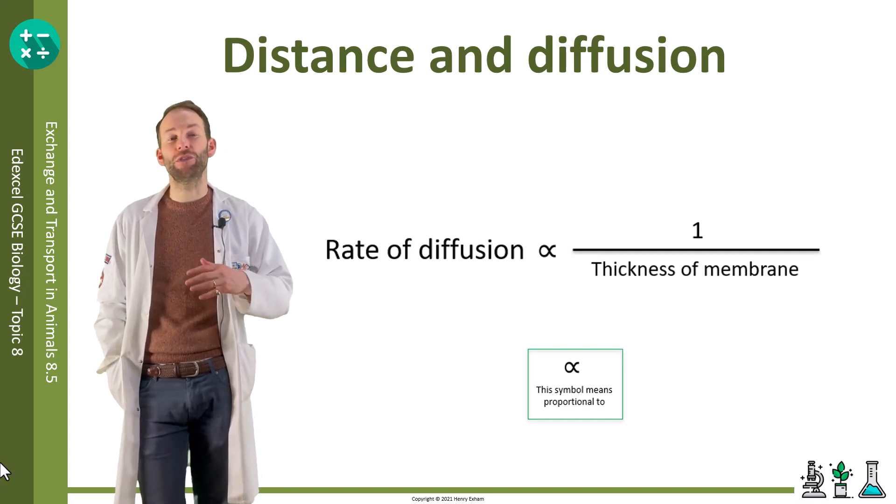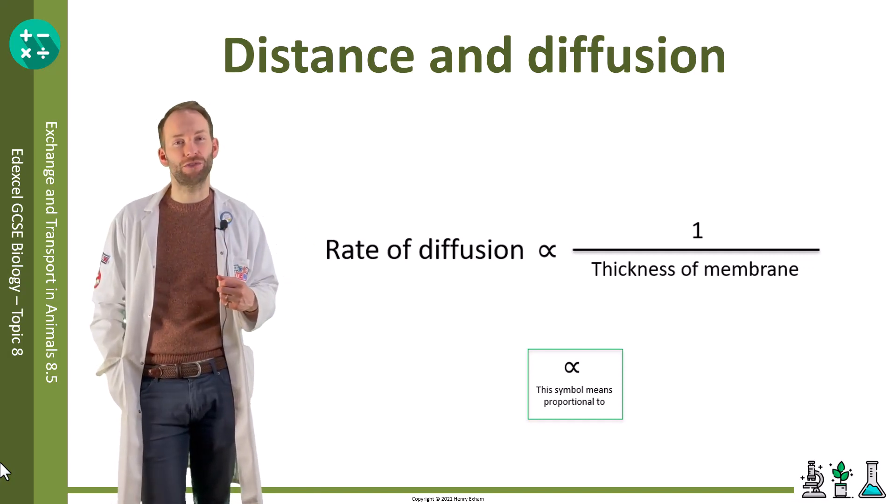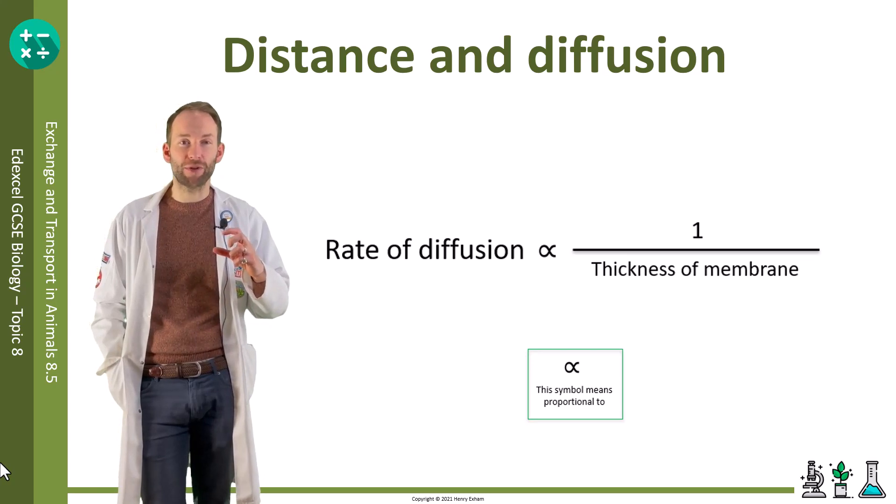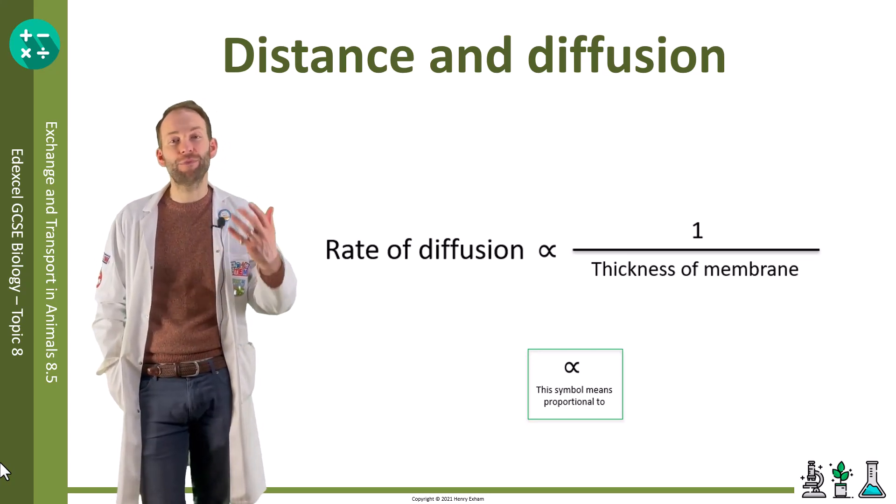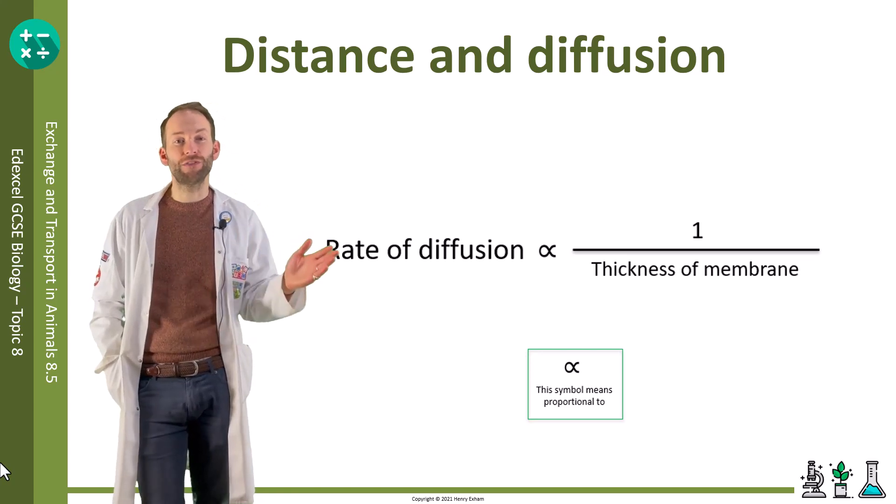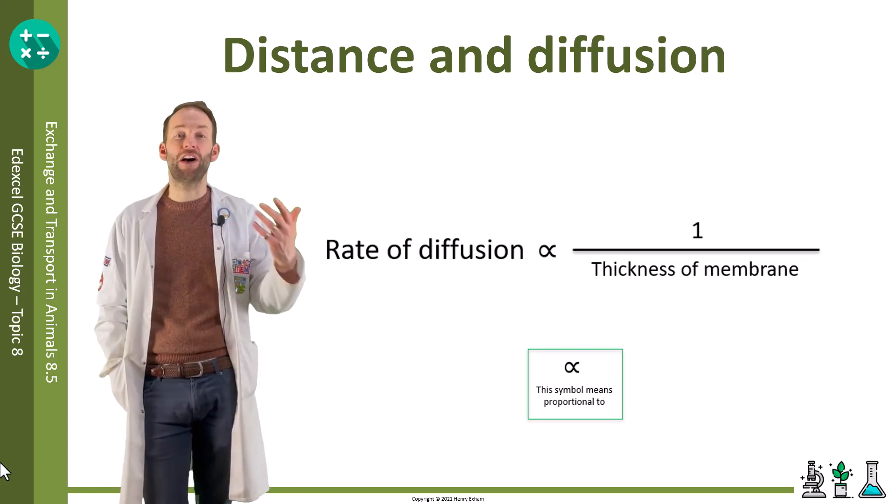The further particles have to diffuse, the slower the rate of diffusion. So increasing the thickness of a membrane decreases the rate of diffusion. This is an inversely proportional relationship - as one variable doubles, the other halves.